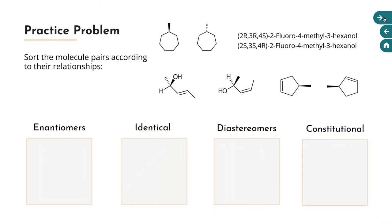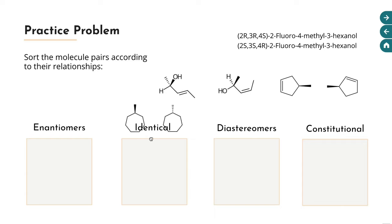Here is another practice problem where we'll sort molecule pairs according to their relationship: enantiomers, identical molecules, diastereomers, or constitutional isomers. Starting with the top two molecules: this one has a seven-membered ring and a methyl group on a wedge pointing out at us, and the second one has a seven-membered ring and a methyl group on a dash pointing away from us. At first glance we might think these are enantiomers because we've switched a wedge to a dash. But you have to be careful because this molecule is not chiral — both sides of the ring are exactly the same, so there are not four different groups attached to that top carbon. This is an achiral molecule. Indeed, if we turn the second one around 180 degrees, we generate the first one. So these are actually identical — we'll move them into the identical box.